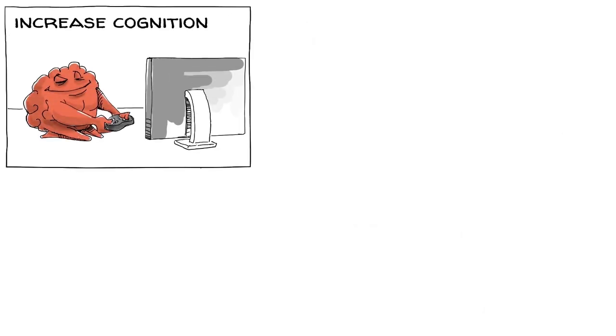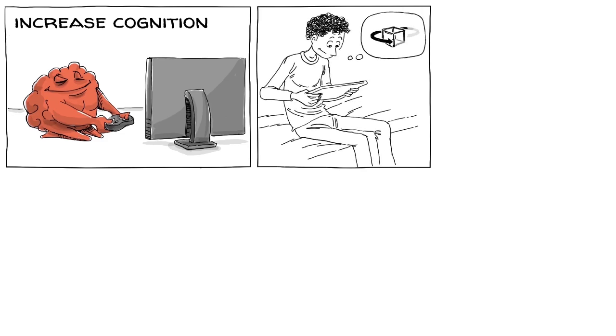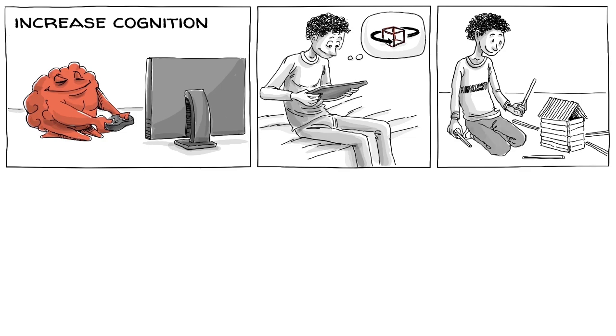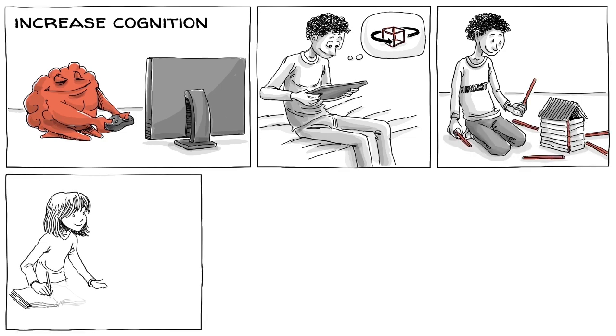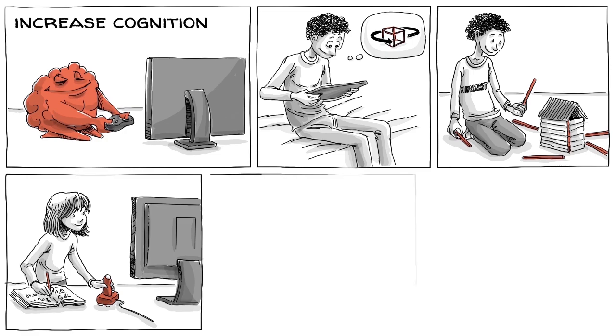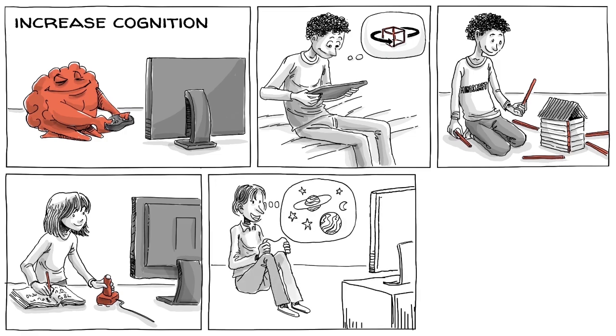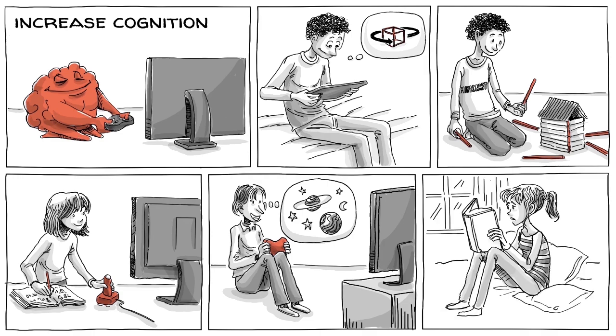Games can increase cognition by strengthening particular areas of our brain. One meta-analysis showed that video games effectively teach mental rotation abilities, and that such learning can be transferred to the real world. Logic and mathematical thinking can also be effectively learned through specific video games. Shooter games, for example, often train our understanding of relations among objects in space better than regular high school programs.